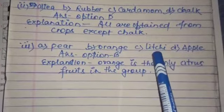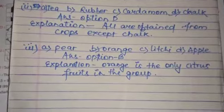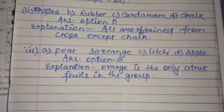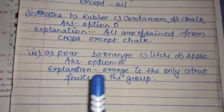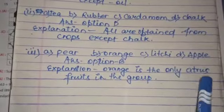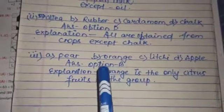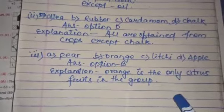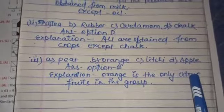Next question: Pear, Orange, Litchi, Apple. Your correct answer is option B. Because except orange, orange is the only citrus fruit in this group. This is your classification.